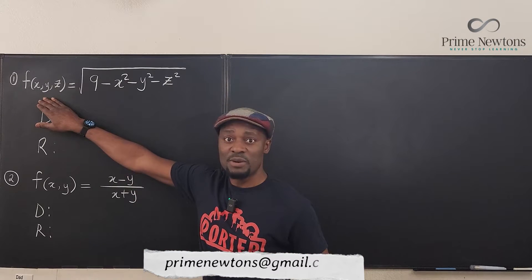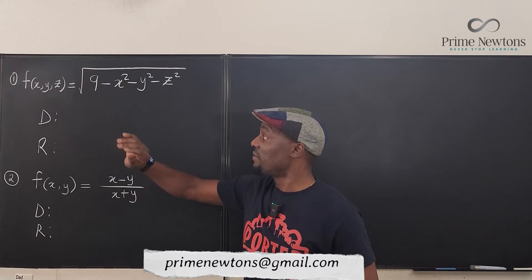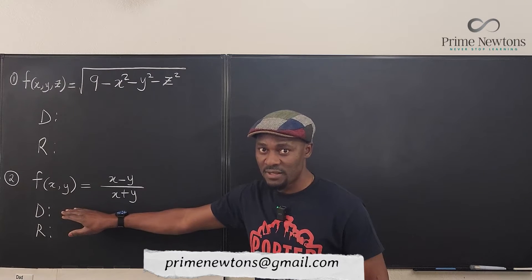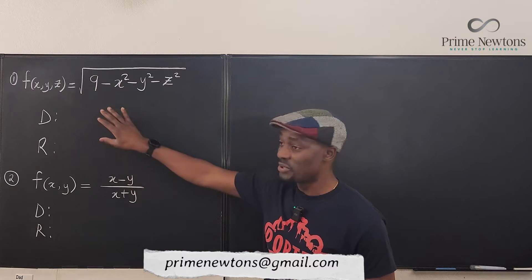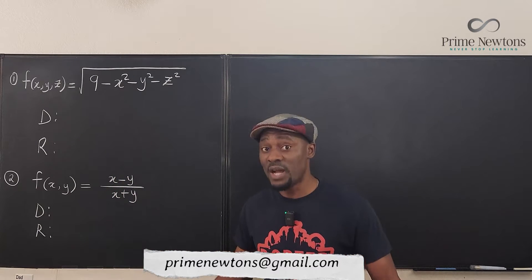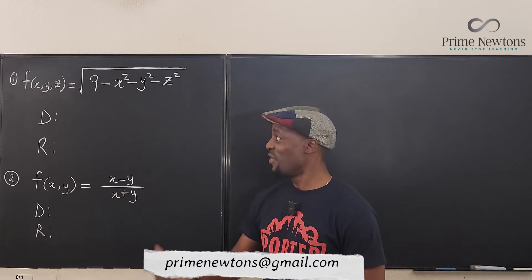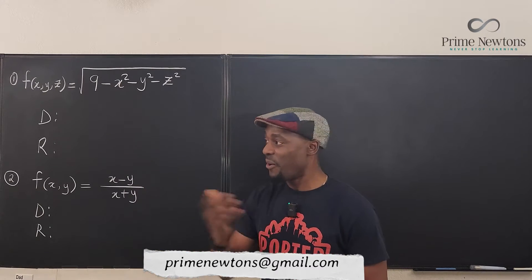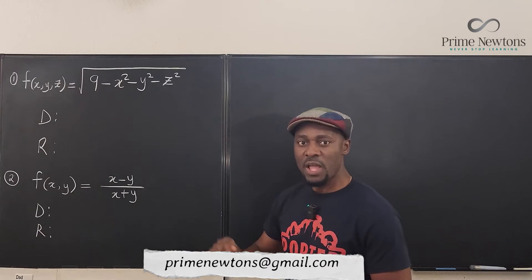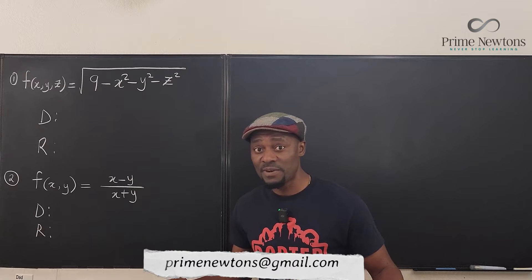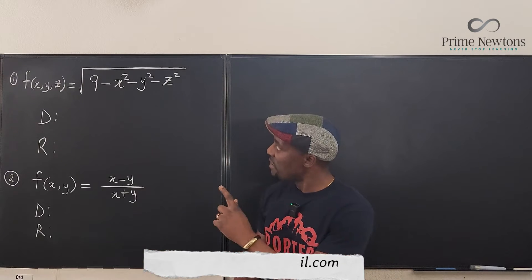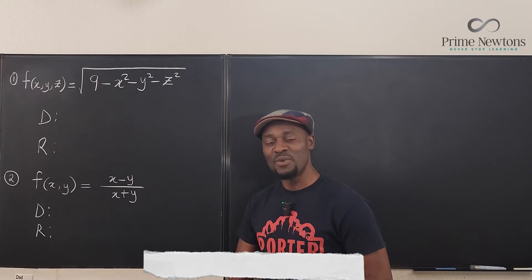The first function has three independent variables, so it's in the fourth dimension. The second has two independent variables, X and Y, so it's in the third dimension — it represents a 3D shape. Unfortunately, I cannot sketch a 4D shape since I live in 3D. However, I can find the domain and range of both. The strategy is not different from a single variable: just think about what cannot be and what can be.